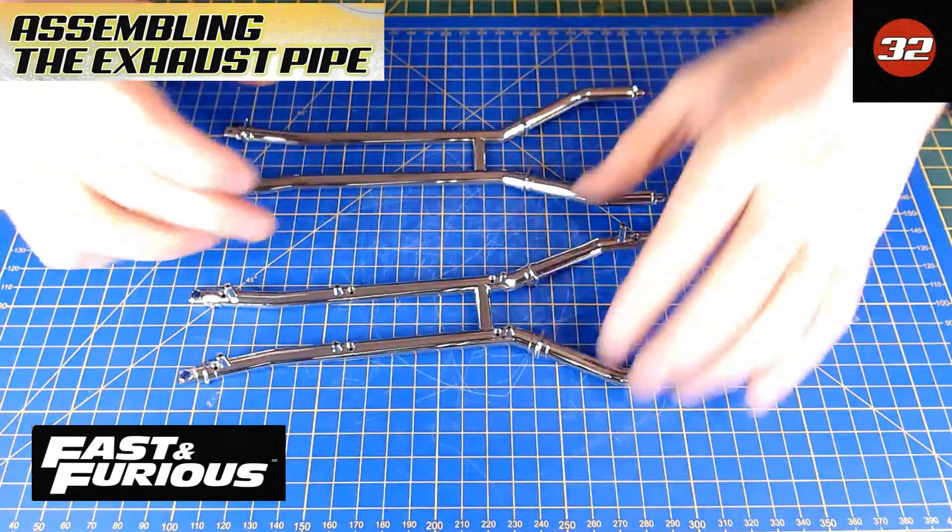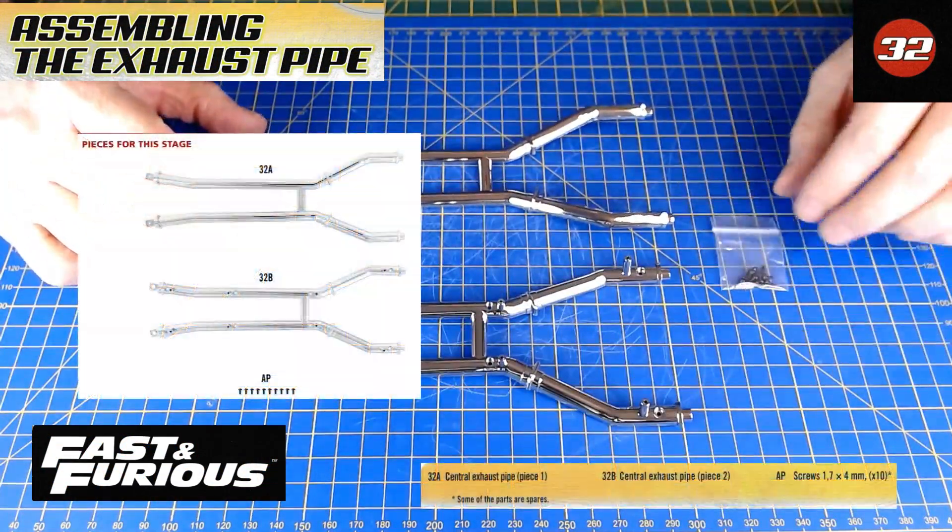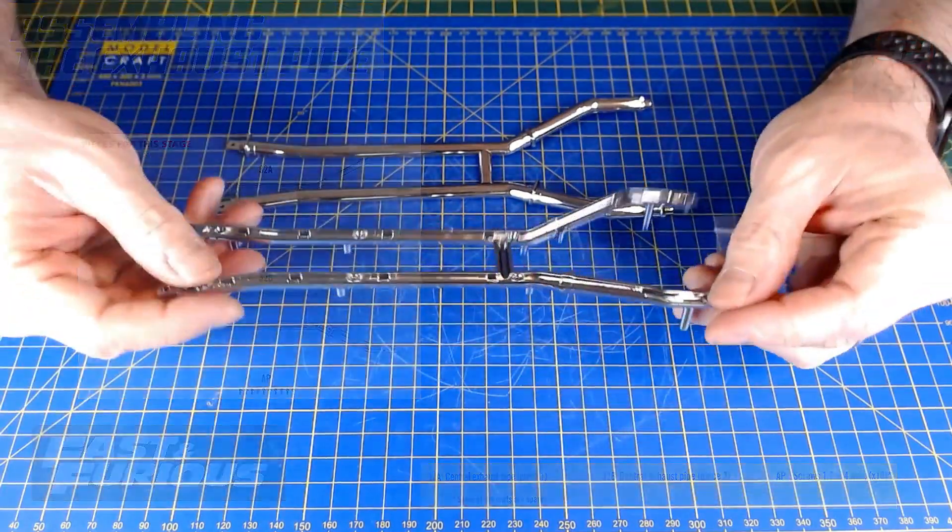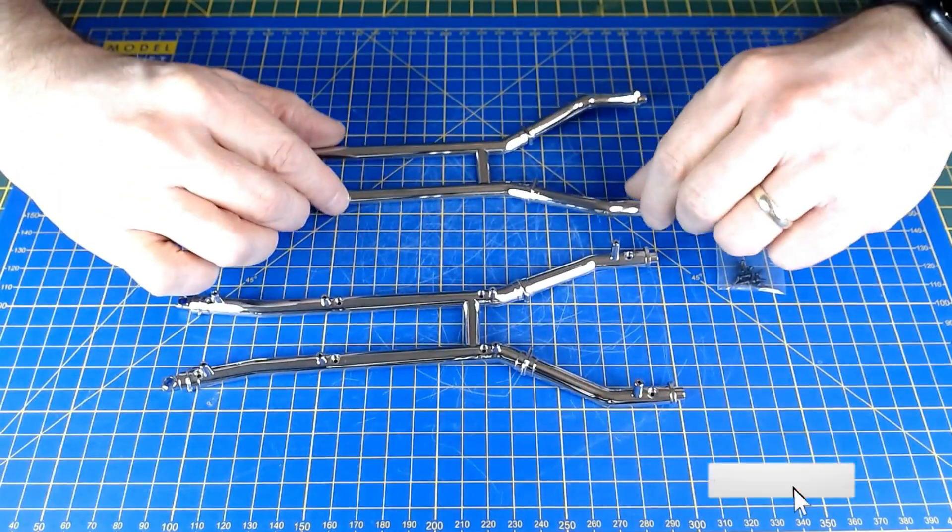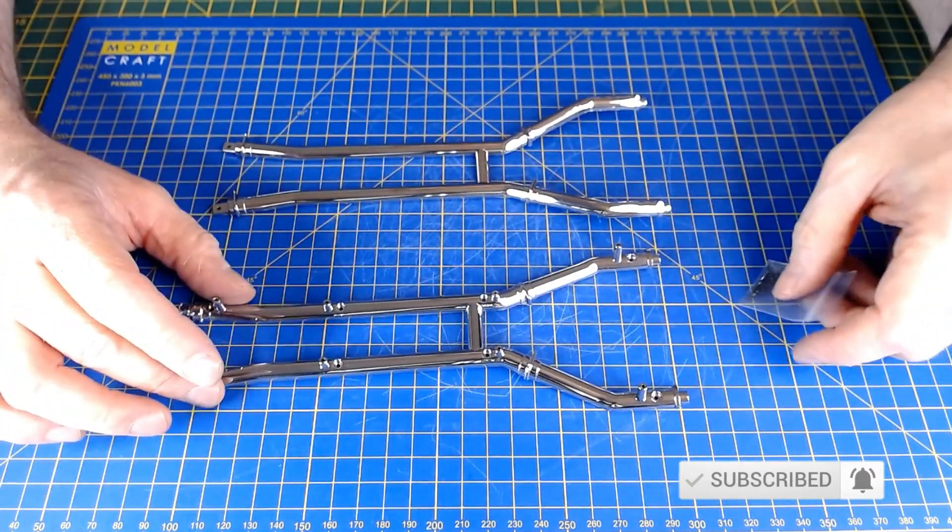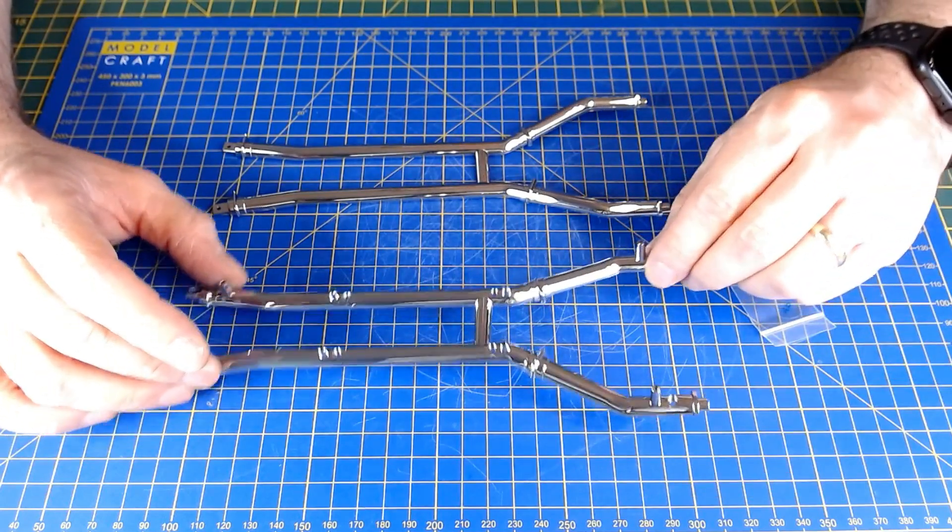Okay, so the parts for issue 32 of the Fast and Furious Dodge Charger. It's the exhaust pipes. Just going to be fitting these together. Just going to be assembling. I don't think we're fitting these to the car at this point. So once again, hopefully a kind of quick issue.